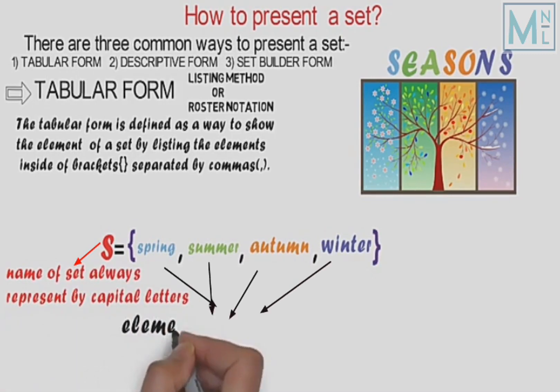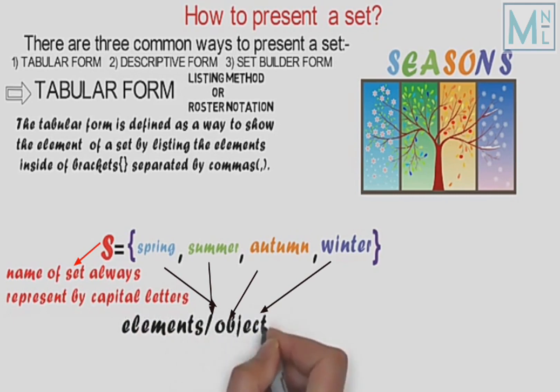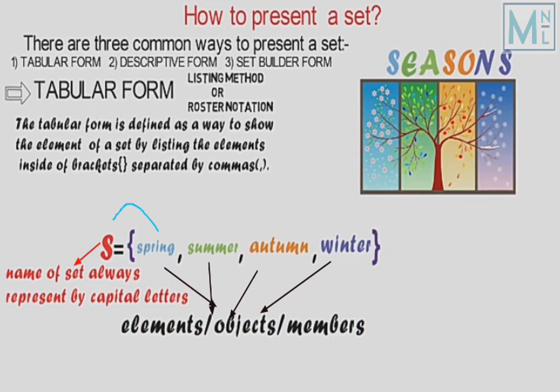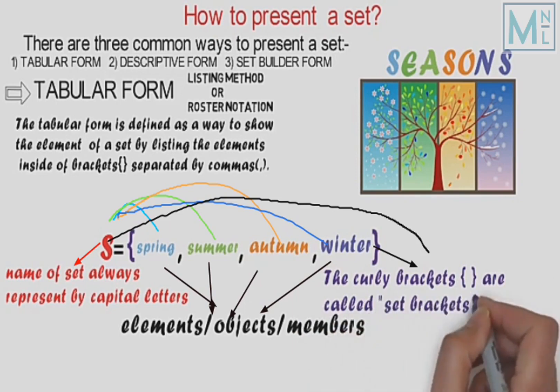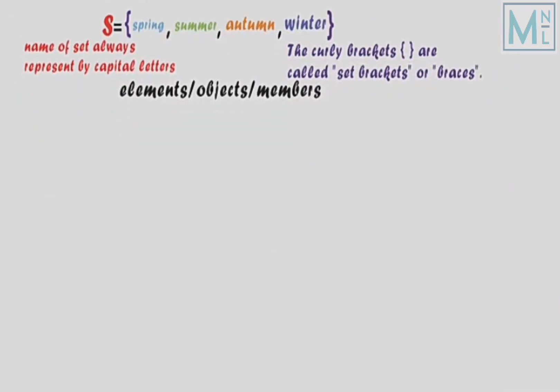Aise method ko tabular form kaha jata hai. Yeh S name of set hai, jo hamesha capital letter mein likha jayega. Aur spring, summer, autumn, and winter ye laayenge elements of set S. Spring is an element of S, summer is an element of S, autumn is an element of S, winter is an element of S. Aur yeh brackets ye laate hain set brackets ya phir braces.